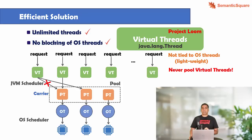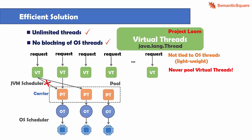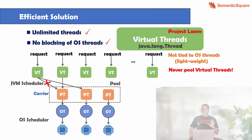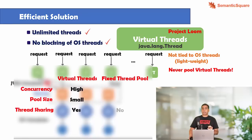If there are no blocking operations, then the mounted virtual thread will use that carrier thread for the entire lifetime of the request. It's only when there is a blocking operation that it will be unmounted and remounted later. So the JVM scheduler is scheduling a large number of virtual threads onto this small pool of platform threads. If there are any blocking operations, the carrier thread will be shared across different virtual threads. Unlike a fixed thread pool, here we can create a large number of virtual threads because they are very cheap to create, the pool size is small, and the platform threads are shared so they are no longer blocked.